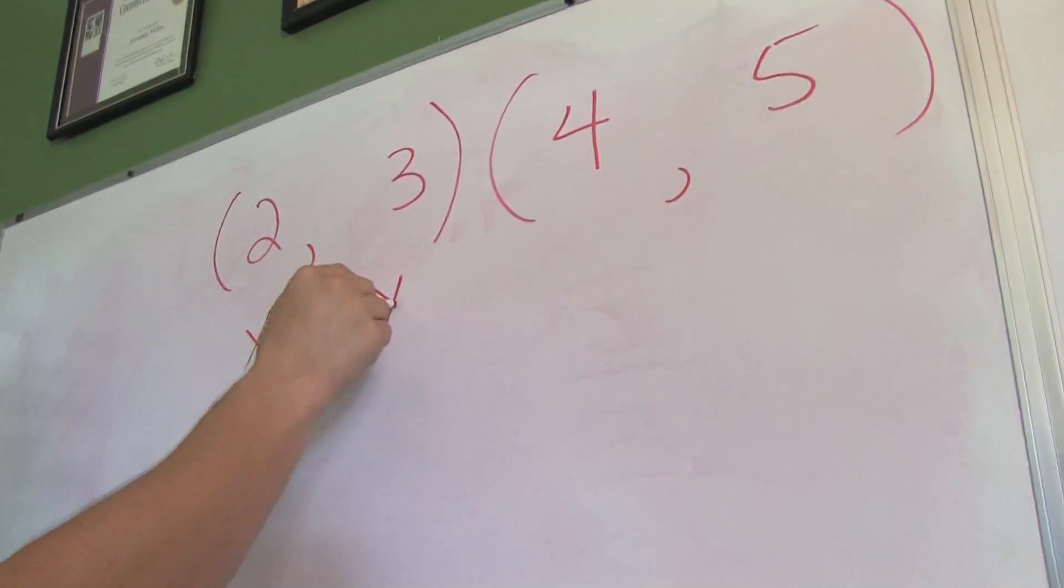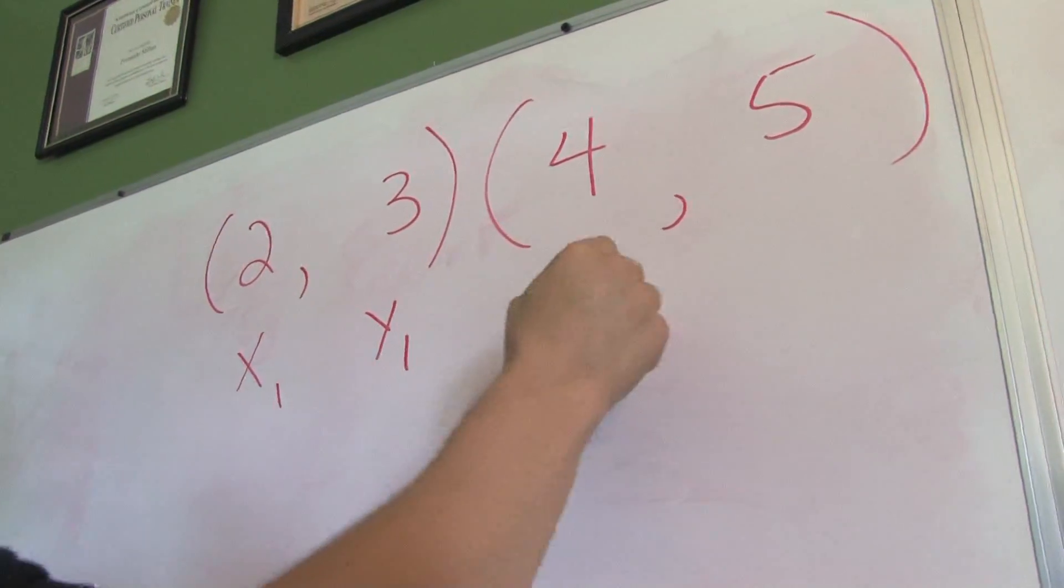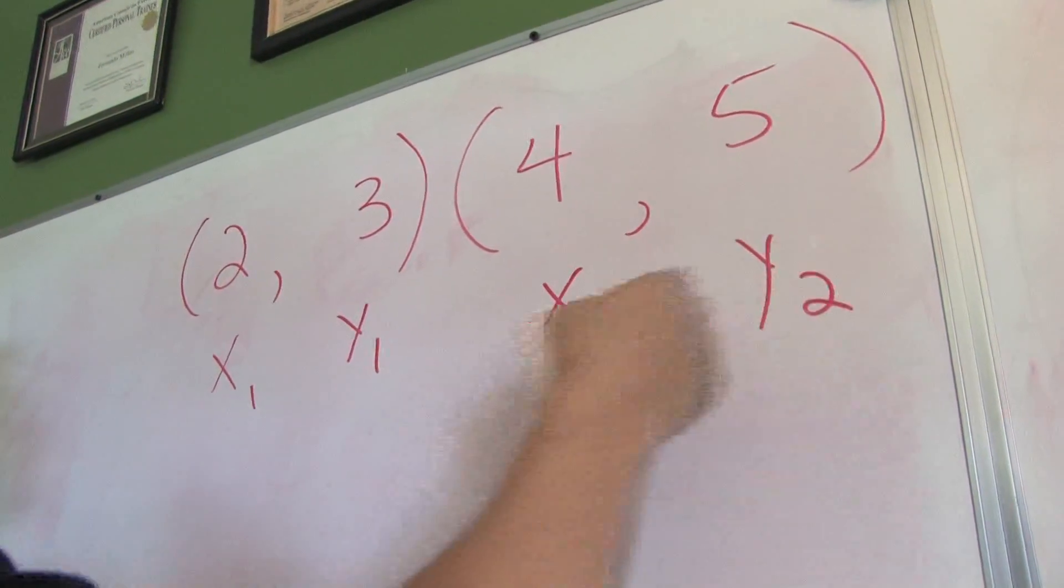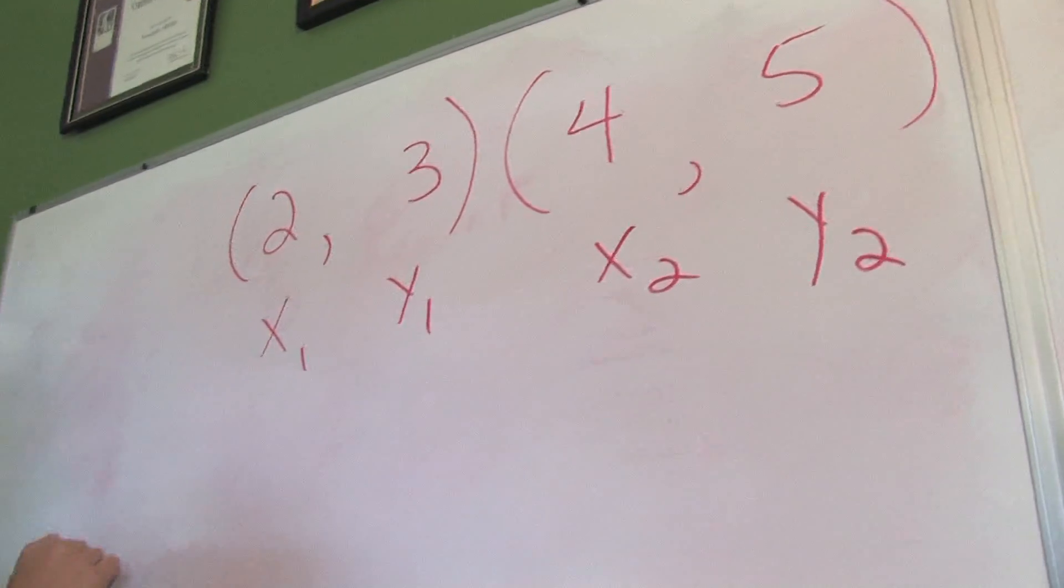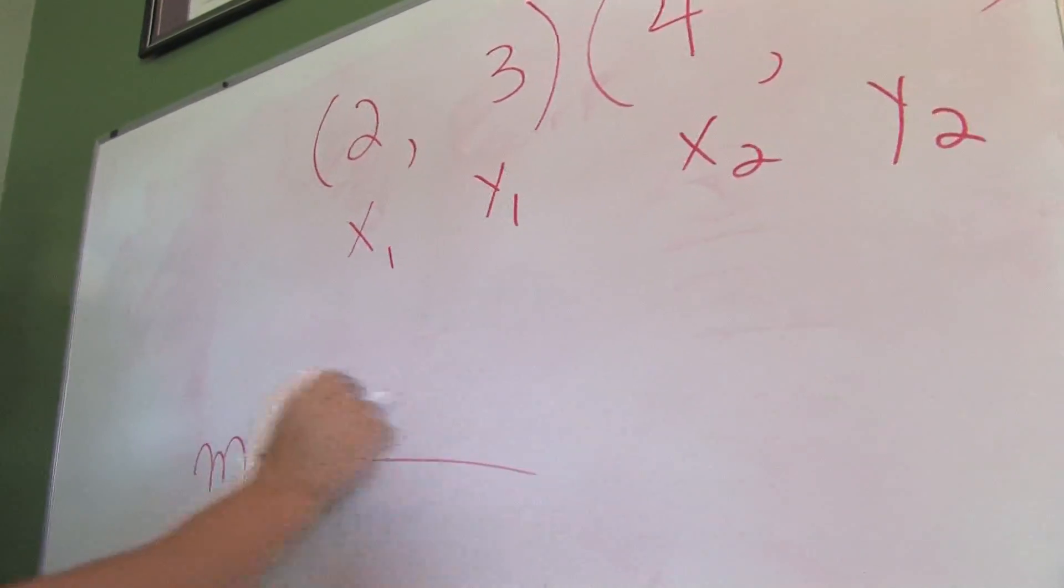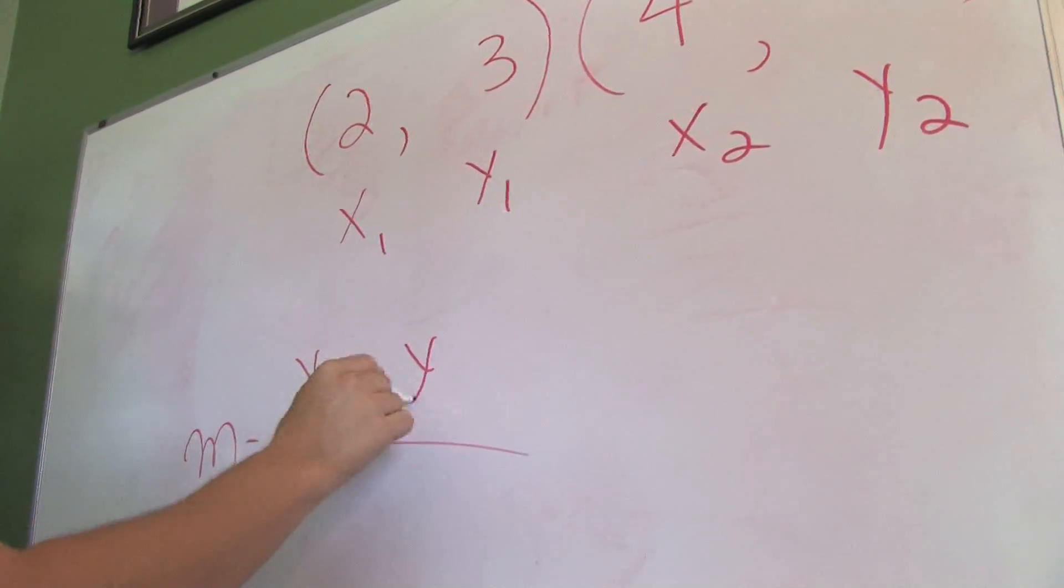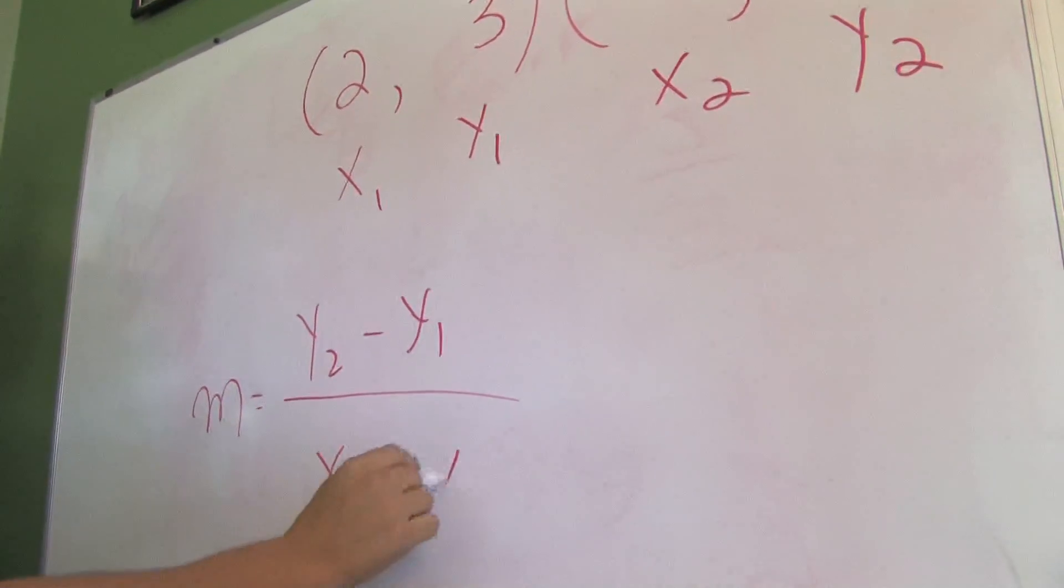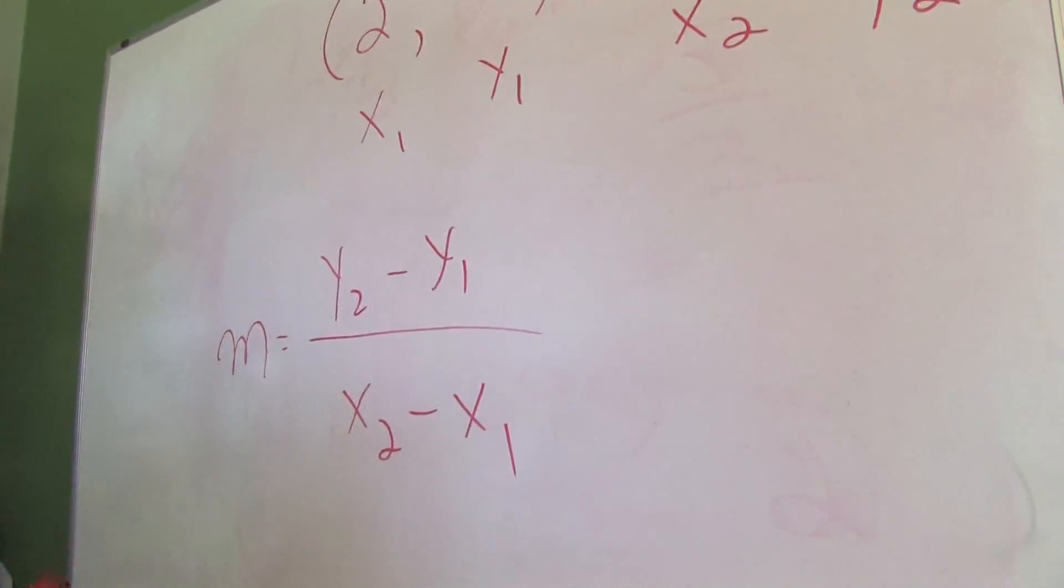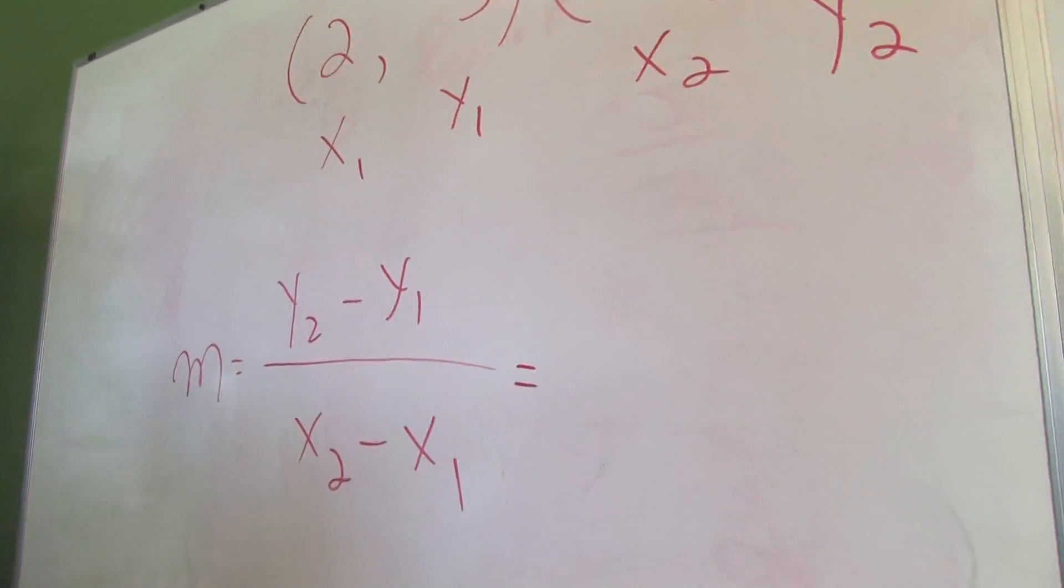You label your point, x1, y1, x2, y2. Label your points and you will never make a mistake. Write down the slope formula which says y2 minus y1 over x2 minus x1. Do not be lazy and skip the formula. Undoubtedly, you'll make a mistake.